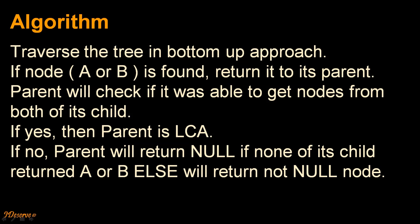The algorithm for this problem is we traverse the tree in a bottom-up approach. If node A or B is found, we return it to its parent. The parent will check if it was able to get nodes from both of its children. If yes, then the parent is the LCA. If no, the parent will return null if none of its children returned A or B, else it will return the not-null node.